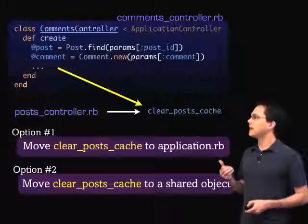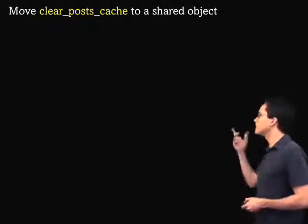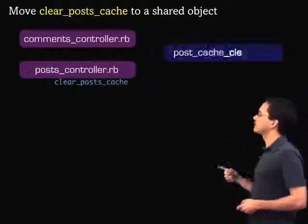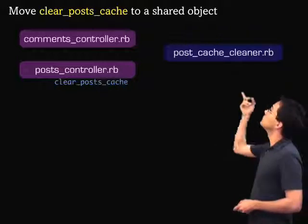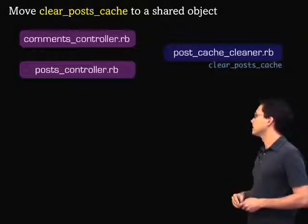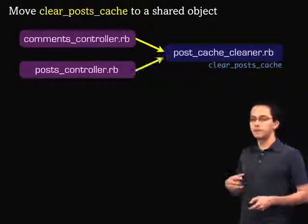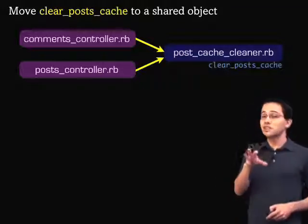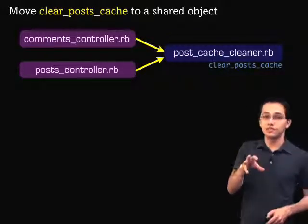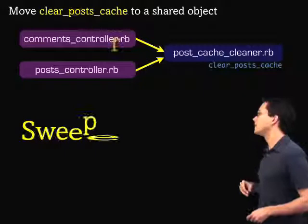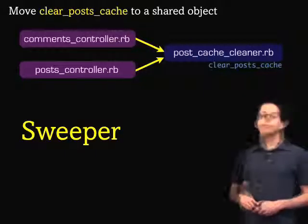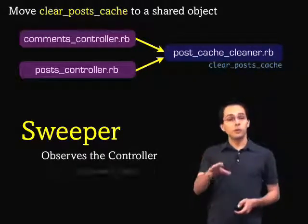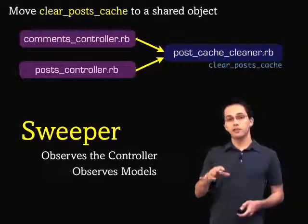What would that look like? So here we've got our two controllers, we've got another Ruby file over here, we move over the function, and then each of these files would include it. We could definitely do this, but there's actually already a convention built into Rails to do this sort of thing, and they're called sweepers. Sweepers can observe controllers, but more importantly, they can observe models.